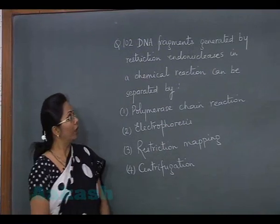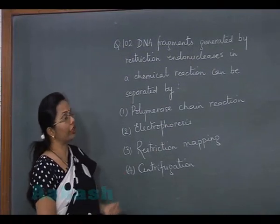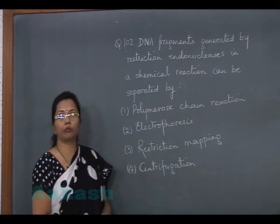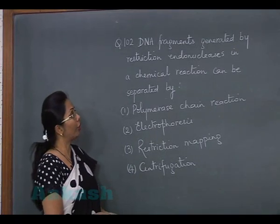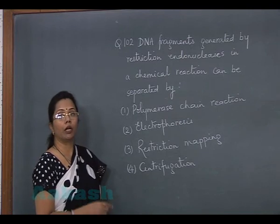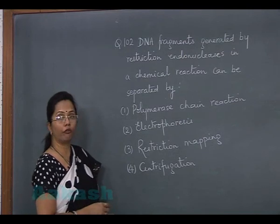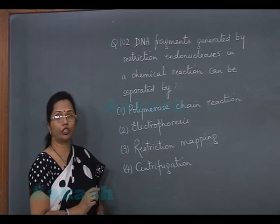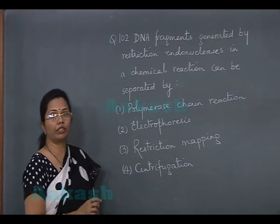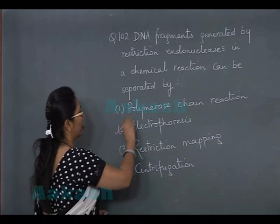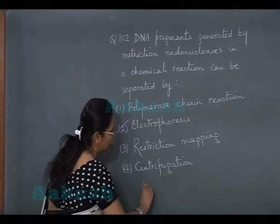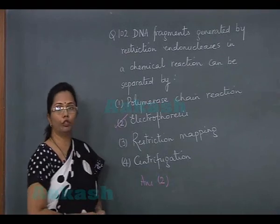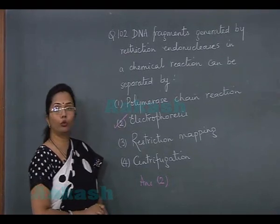Question 102: The DNA fragments generated by restriction endonucleases in a chemical reaction can be separated. Restriction endonucleases cut the DNA in both strands, and since DNA is a charged molecule, it can be separated by electrophoresis. So the answer is option 2.